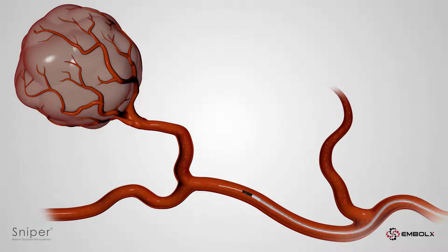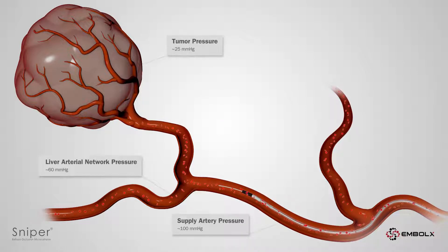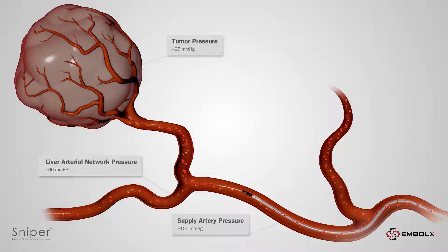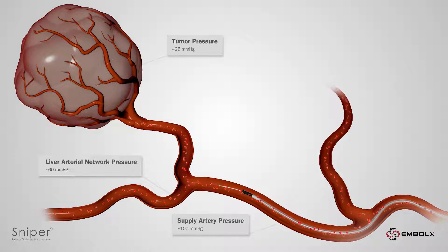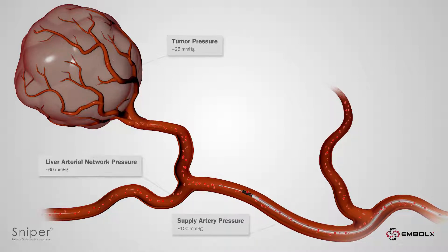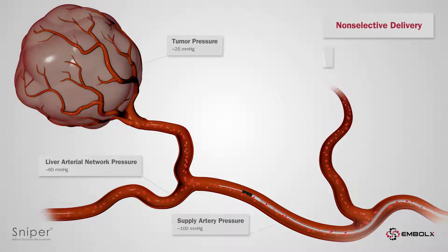Blood flows naturally from high pressure to lower pressure, navigating towards branch arteries as well as the tumor. Sniper uses pressure-directed therapy to control flow for precise embolic delivery. There are two methods to achieve pressure-directed therapy — non-selective and selective delivery.